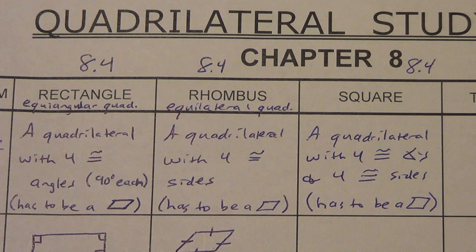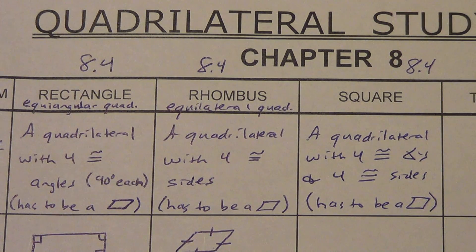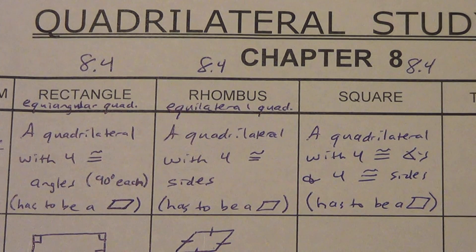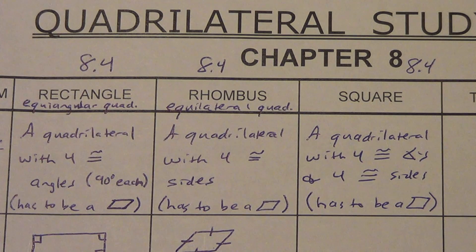If a quadrilateral has two sets of opposite congruent sides, then it has to be a parallelogram. Well, if a square has four congruent sides, then it definitely has opposite congruent sides. Or we could use the one that says: if a quadrilateral has two sets of opposite congruent angles, then it is a parallelogram. Since it has four congruent angles, it's going to have two sets of opposite congruent angles.